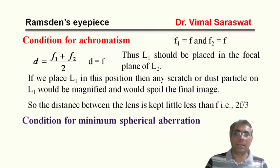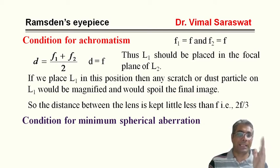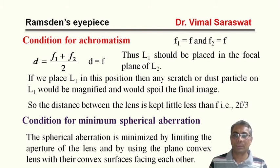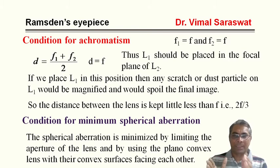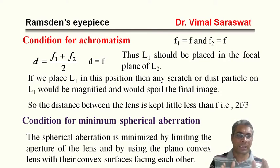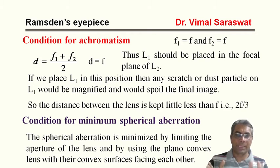The condition for minimum spherical aberration: spherical aberration is minimized by limiting the aperture of the lens and by using plano-convex lenses with their convex surfaces facing each other.